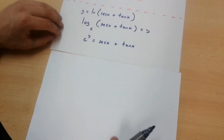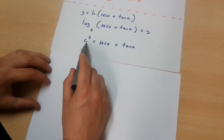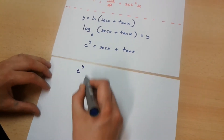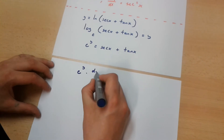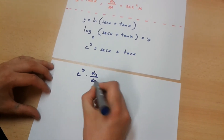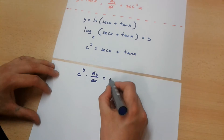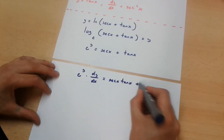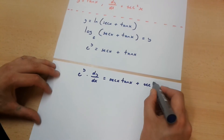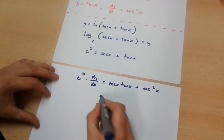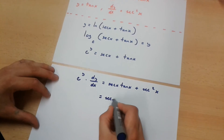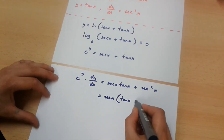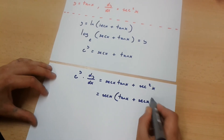If we use implicit differentiation, we are going to get e to the power of y times dy over dx is equal to sec x tan x plus sec x squared. And this is in fact equal to sec x multiplied by tan x plus sec x.